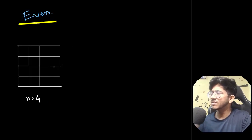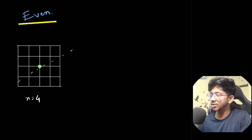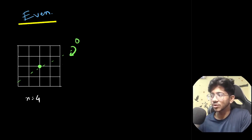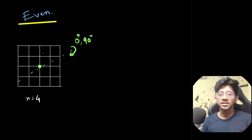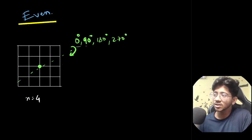Let's start with the even case, say n=4. There is a rotational axis going through the center of the board. The distinct rotations are: 0°, 90°, 180°, and 270°. Rotating the board by each of these angles gives you the same diagram back, so these are the four group elements we need to consider for this particular case.